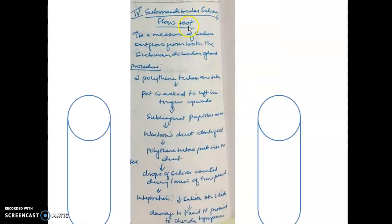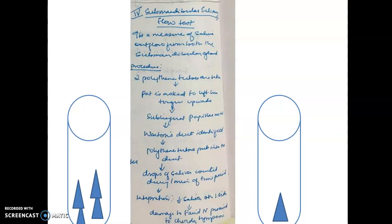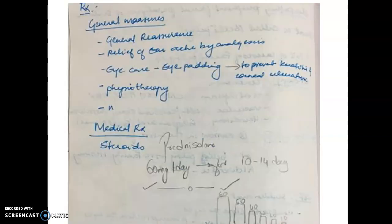The submandibular salivary flow test is used when taste is equal on both sides. Two polythene tubes are placed on the sublingual papilla beneath the tongue, and saliva drops are collected over five minutes. If one side collects less saliva than the other, the facial nerve on the corresponding side is damaged proximal to the chorda tympani, since the chorda tympani supplies the submandibular ganglion and submandibular salivary gland. Thank you for watching this video — kindly subscribe.